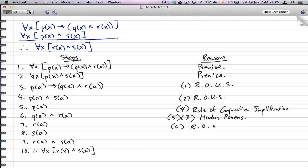So q(a) and r(a)—r(a) goes both ways. For eight, we have four. We're using four and we're using the rule of conjunctive simplification.